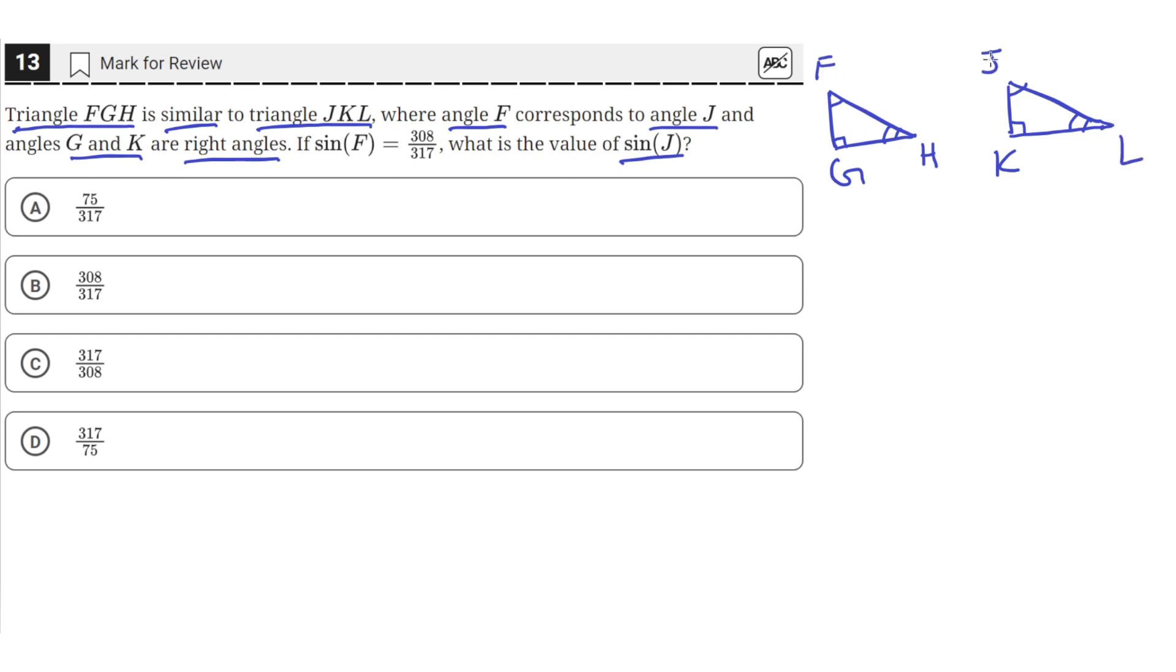So triangle FGH, triangle JKL, where G and K are the right angles. So we know that the sine of F, angle F, is equal to this number 308 over 317. And what we need is the sine of J.